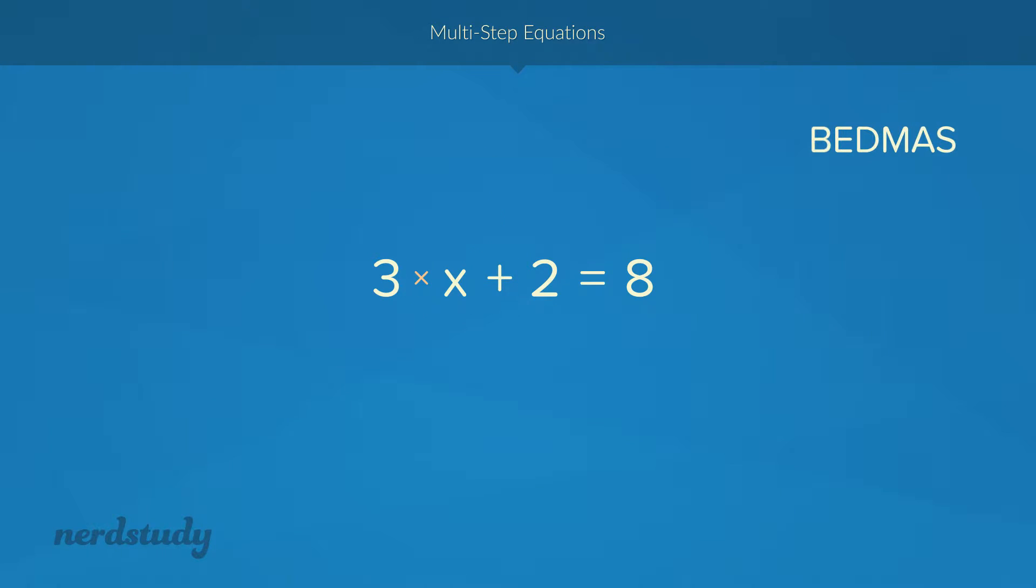Good. So what's the inverse operation of addition? It would be subtraction. So we subtract by 2 on both sides. Great. Now the only thing left is to deal with the multiplication of 3, and the opposite of that would be to divide by 3. And we get x equals 2.